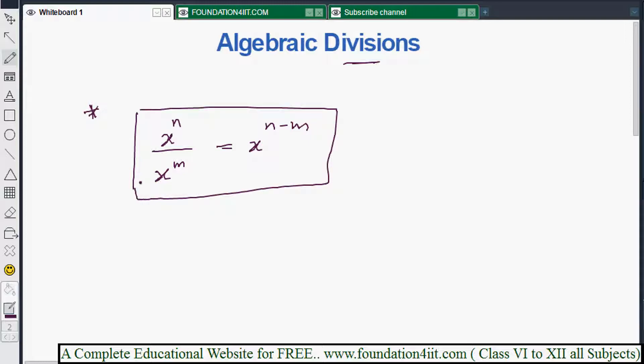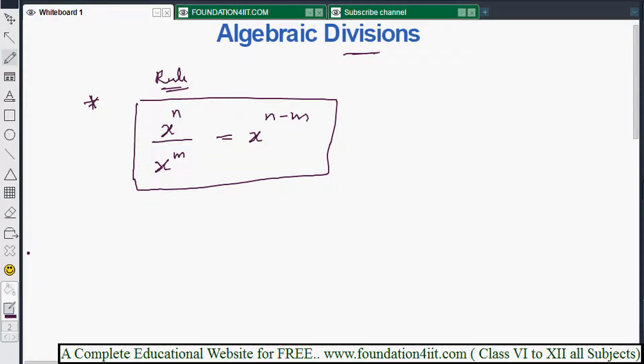Let's see some problems. For example, x to the power 3 by x to the power 2. Now the base is same, x is the base. Power is 3 and down power is 2. So x to the power, according to formula, 3 minus 2, that is x to the power 1, which is nothing but x. You can see it in another way also. x to the power 3 means x multiplied 3 times, by x to the power 2 means x multiplied 2 times. So if you cancel 2 x's, the remaining is this.